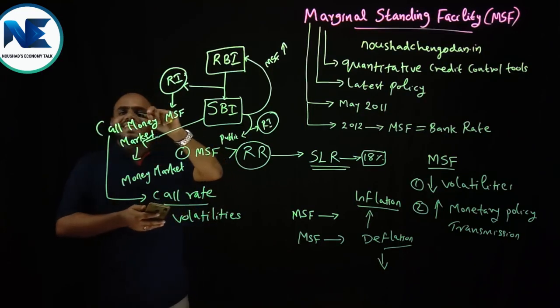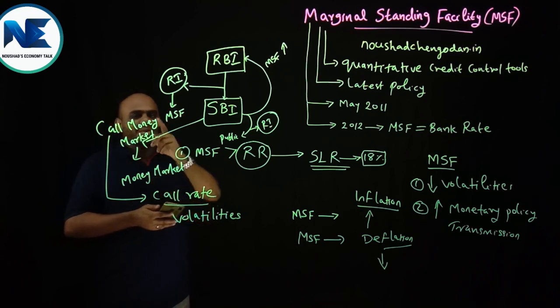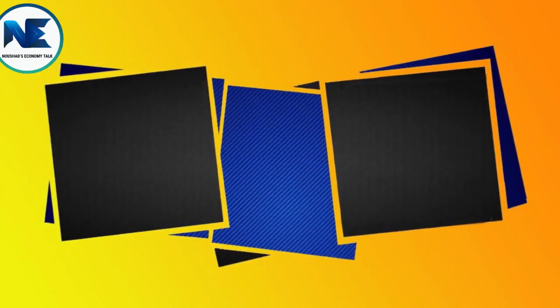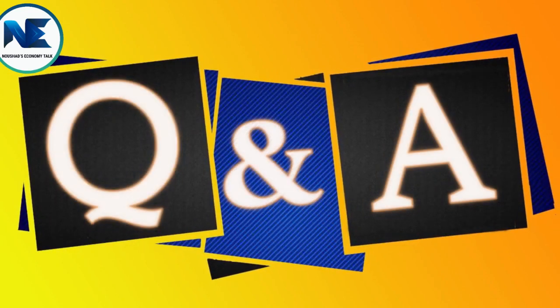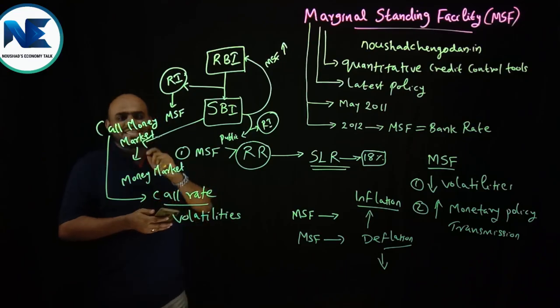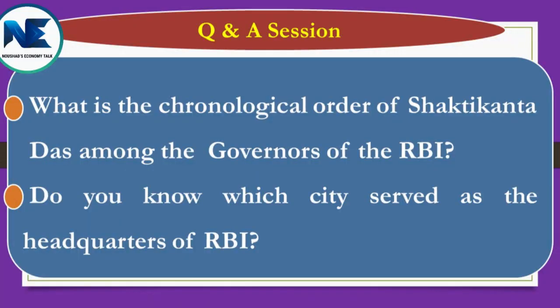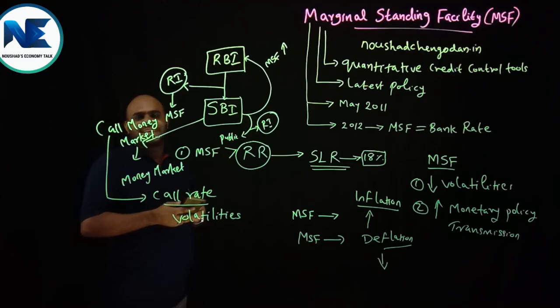Now I would like to add a question and answer session. You can put your answers in the comment section. The first question is: what is the chronological order of Shaktikanta Das among the governors of the RBI? Shaktikanta Das is the present RBI governor. The second question is: which city serves as the headquarters of RBI?